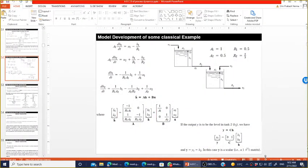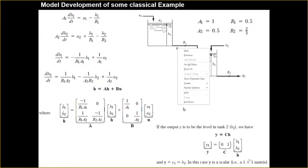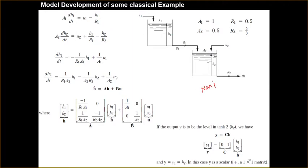Today we are going to discuss the modeling of the mercury thermometer as well as some examples of state space. This is the basic model development of the non-interacting tank system using the state space technique. Since it is a non-interacting system, R1 gives us Q1 equal to H1 by R1, and Q2 is equal to H2 by R2.